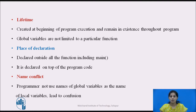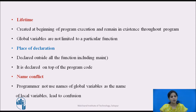Global variables are declared outside all functions, including the main function, and it is always recommended to declare them at the top of the program code. Regarding name conflict: if a variable declared in a function has the same name as a global variable, the function will use the local variable and ignore the global variable. However, programmers must not use global variable names as local variable names, as this may lead to confusion.